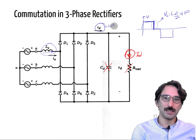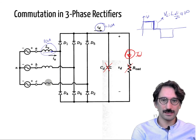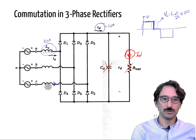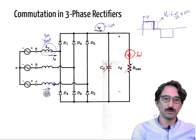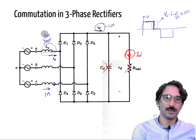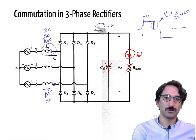Let's say the current is 10 amps. That current will come down to zero gradually, and say the current coming from phase C cannot jump immediately to 10 amps. So at one instant it might be 9 amps and 1 amp, then 8 amps and 2 amps — they always add up — until one reaches zero and the other reaches ID.